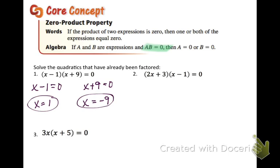If x were one we would get a true statement if we plugged it back into the equation, because in this first parenthesis one minus one is zero, so we would get zero — we would get ten in the second parenthesis, but that's okay. And x is also equal to negative nine because if we plug negative nine into the equation, that second parenthesis would be zero, so we would get zero out in the end. So you can check your answers that way.